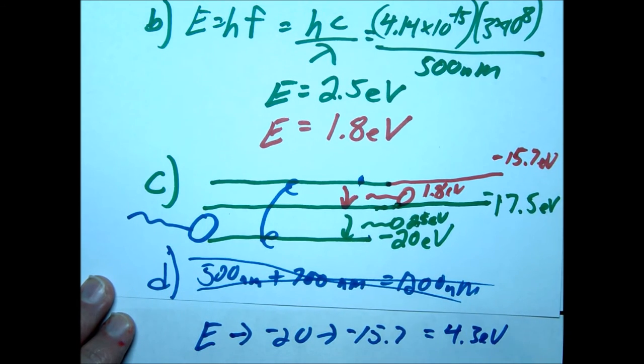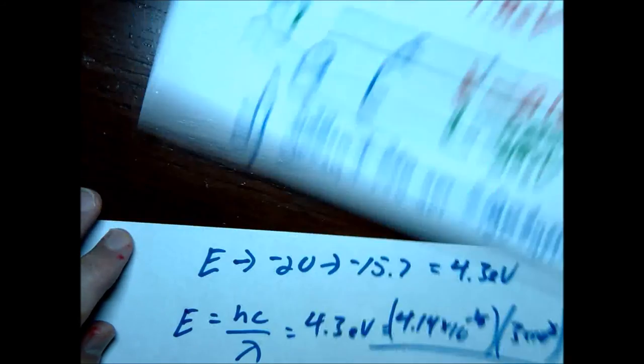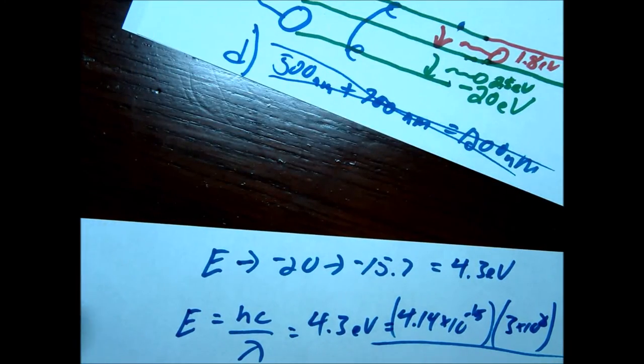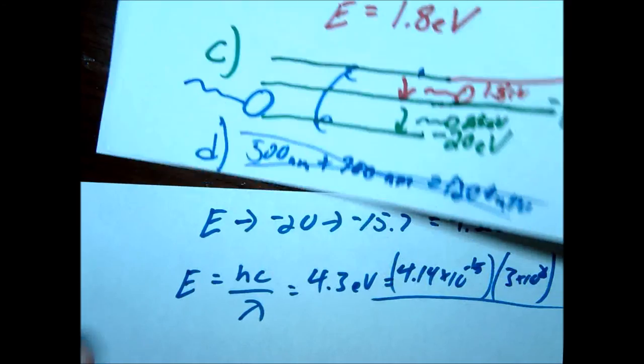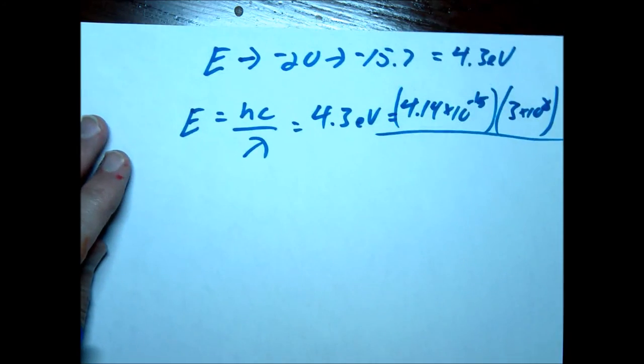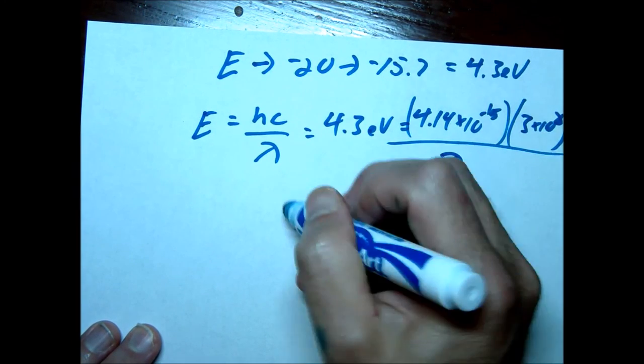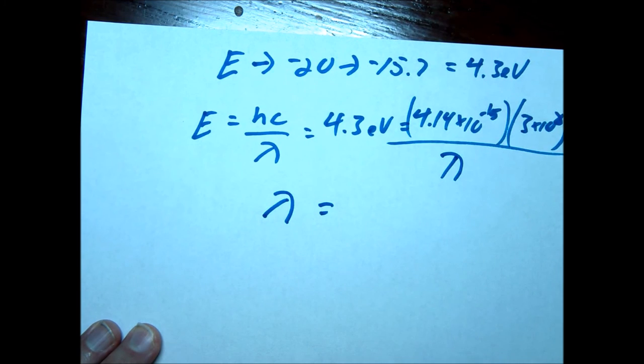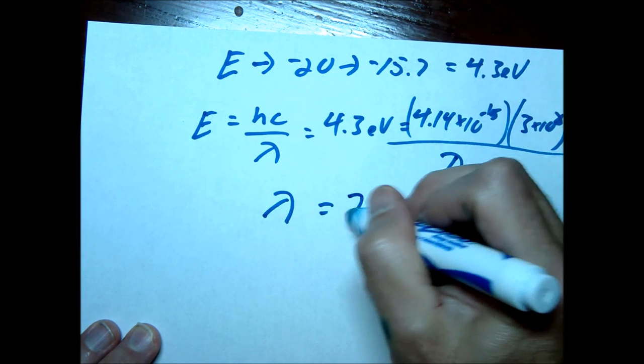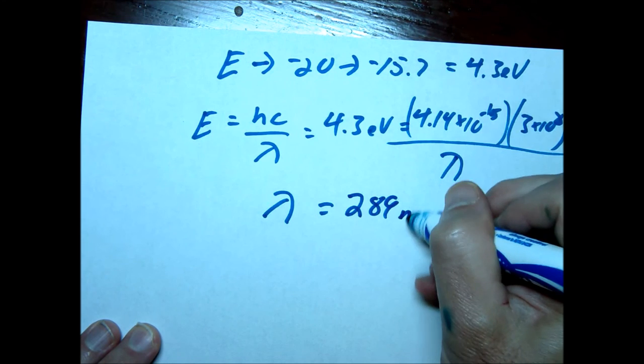We use E equals hc over lambda. This time we're solving for lambda. H is 4.14 times 10 to the negative 15, c is 3 times 10 to the 8th. We divide by 4.3 and solve for lambda. You should get approximately 289 nanometers.